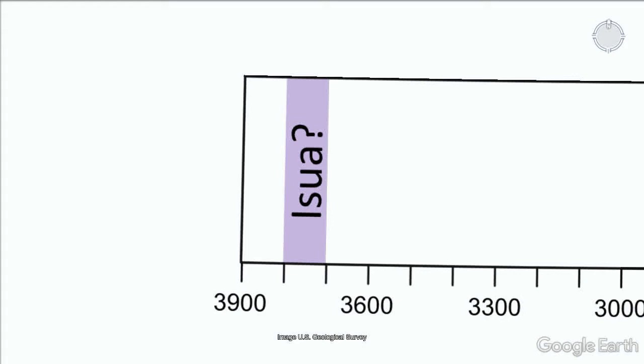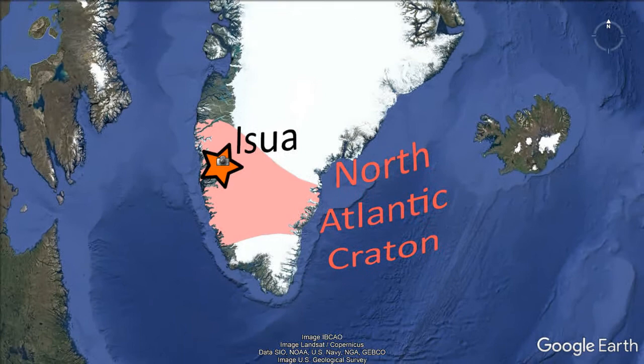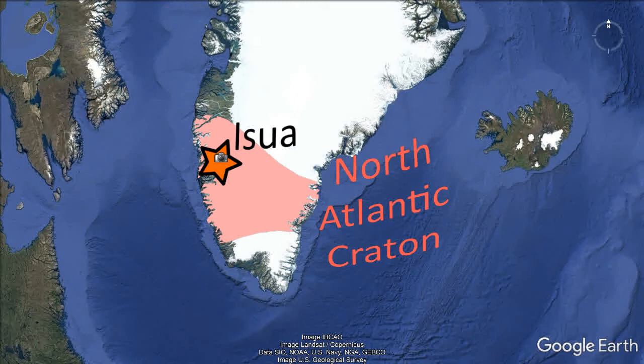The Ischewod supercrustal belt is found in the North Atlantic Craton, mainly located in Greenland with smaller chunks in northern Labrador and northern Scotland. There's a range of crustal ages from about 3.8 all the way down to 2.5 billion years. The craton is dominated by TTG — tonalite-trondhjemite-granodiorite — gneisses.